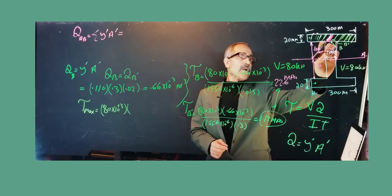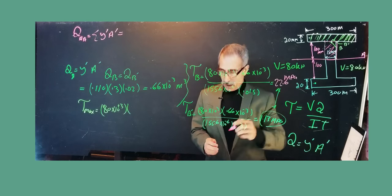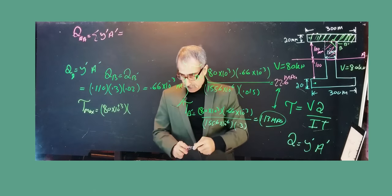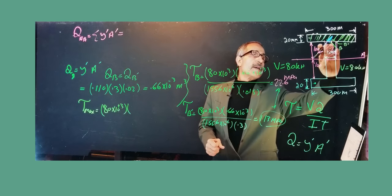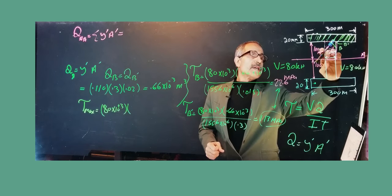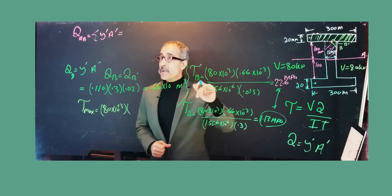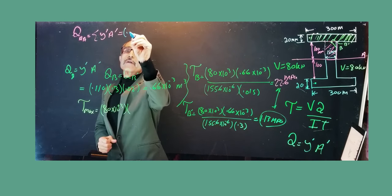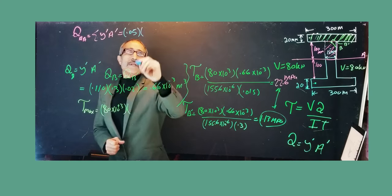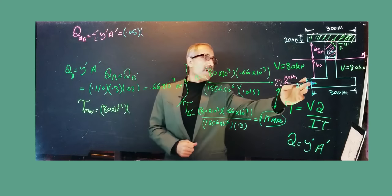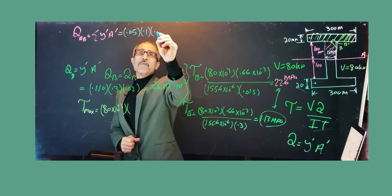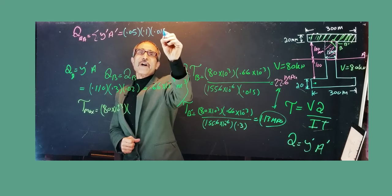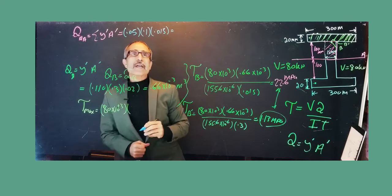This pink-shaded area represents the web portion above the neutral axis. The halfway distance from here to the neutral axis is 50 mm, so y' = 0.05 m, and the area is 0.1 × 0.015.